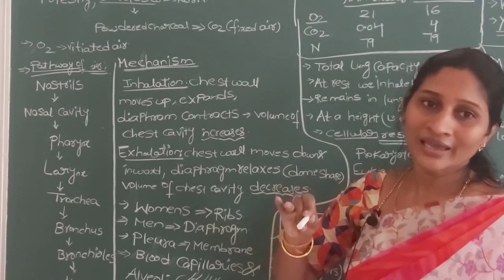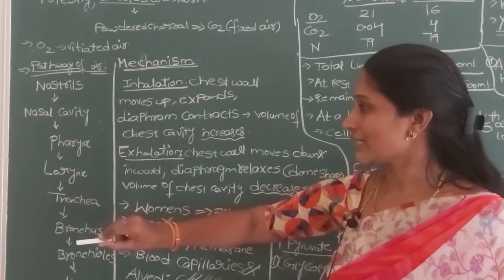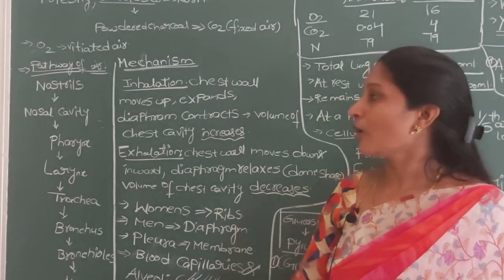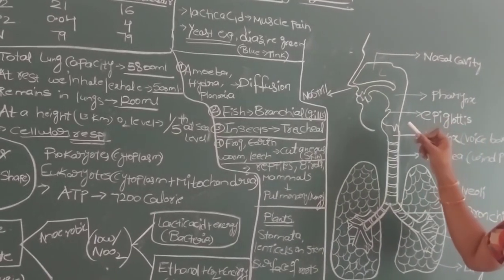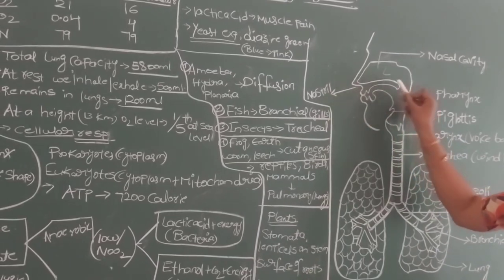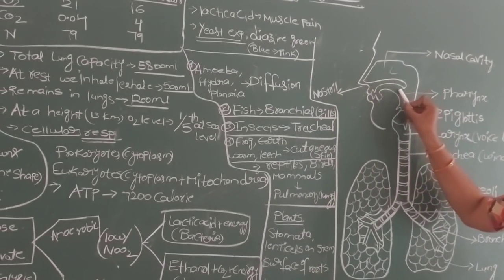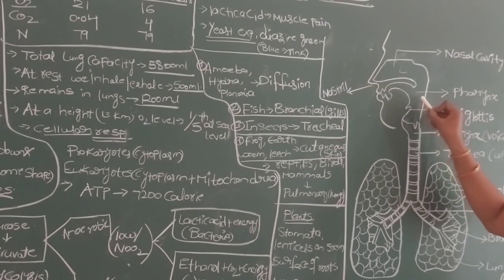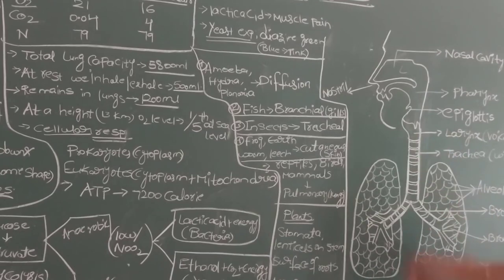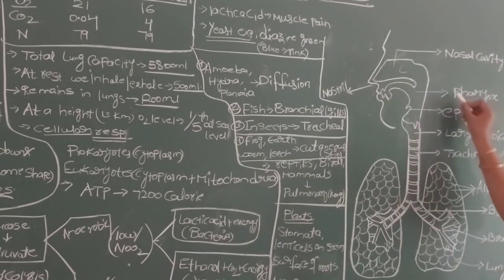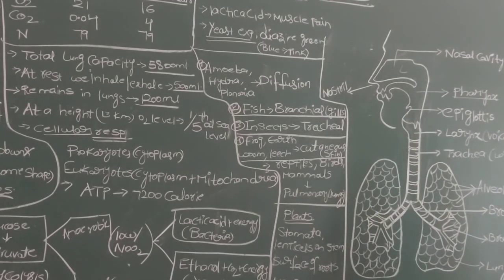Dust particles are filtered by the hair and mucous membrane in the nasal cavity. The pharynx is the common passage for both food and air. Air inhaled and food taken both pass through the pharynx, and from there they take separate routes — air enters the larynx and trachea, while food enters the food pipe.